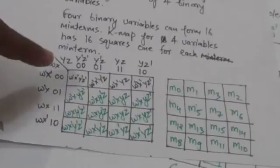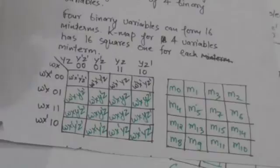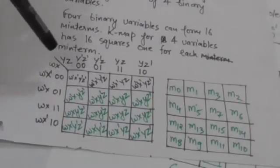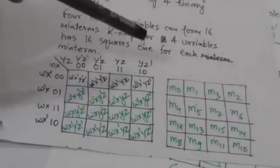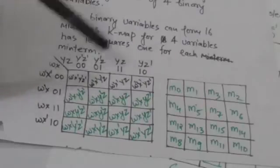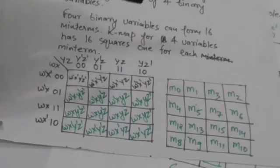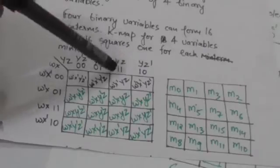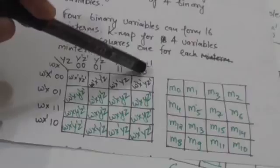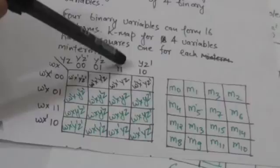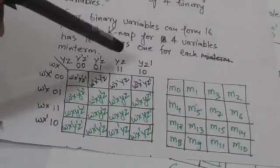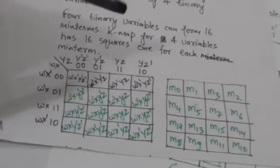Now this is a K-map for four binary variables W, X, Y, and Z. In this map, columns are labeled by YZ and rows are labeled by WX. The binary numbers representing the values of binary variables are written in reflected code sequence — in reflected code sequence, the next number is obtained by changing only one bit of the previous number, either from 1 to 0 or from 0 to 1.